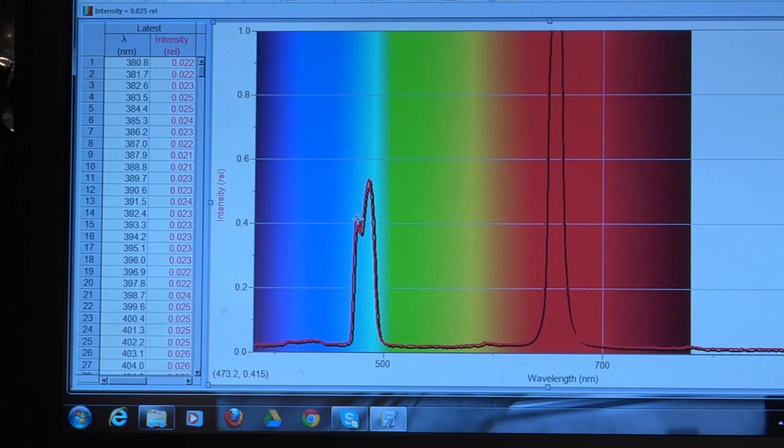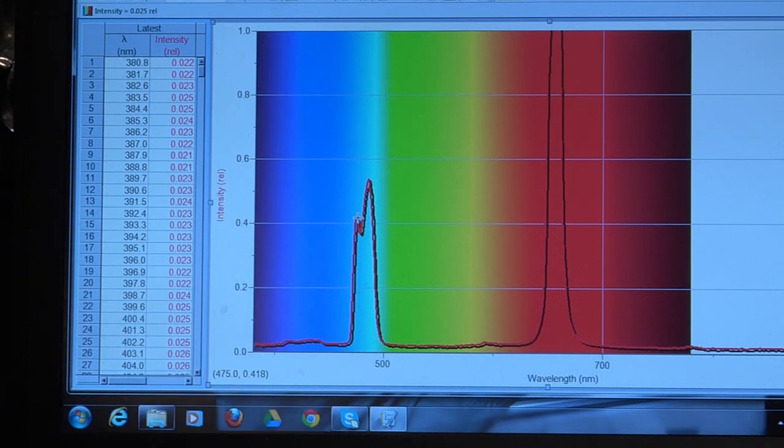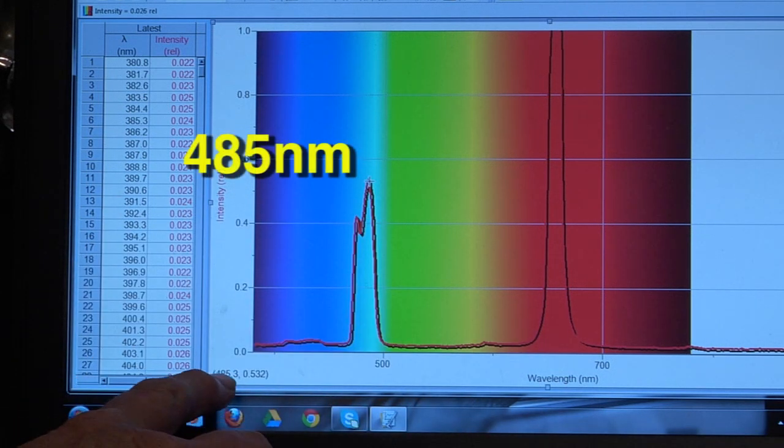If we move our cursor right to this first peak, you can see that it's approximately at 475 nanometers. If we move to the second peak, you can see that it is 485 nanometers. So that's the wavelength.